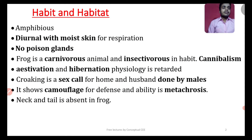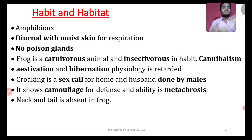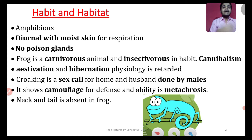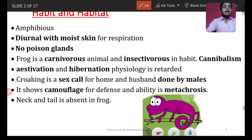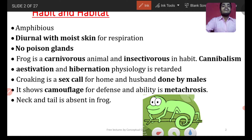First of all, where does frog live and what kind of organism is it? Frog is an animal — an amphibious animal. 'Amphibious' means 'dwi' (double) life — frog can live in both water and on land. That is the meaning of amphibious.